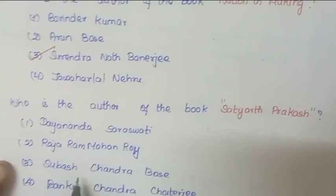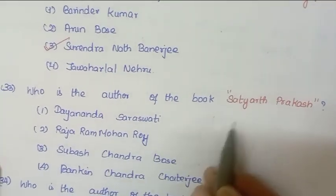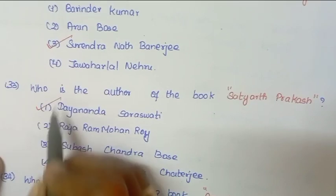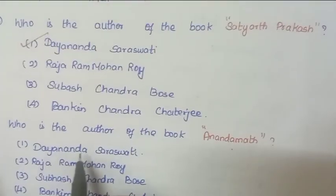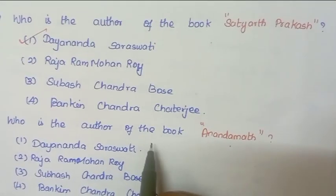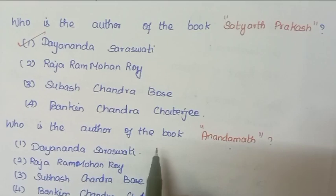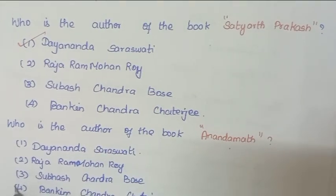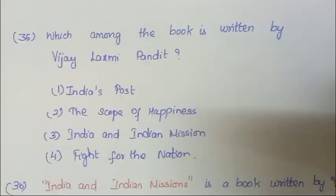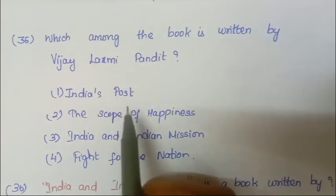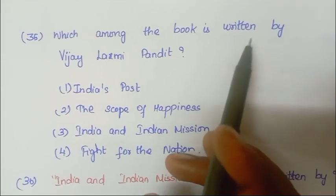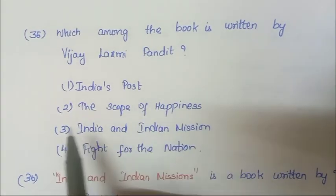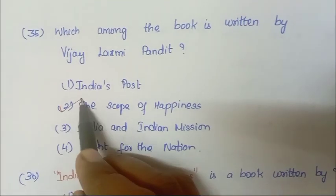Next question: Who is the author of the book Satyarth Prakash? Answer is Dayananda Saraswati. Next question: Who is the author of the book Anandamath? Answer is Bankim Chandra Chattopadhyay. Next question: Which among the following books is written by Vijay Lakshmi Pandit? Answer is The Scope of Happiness.